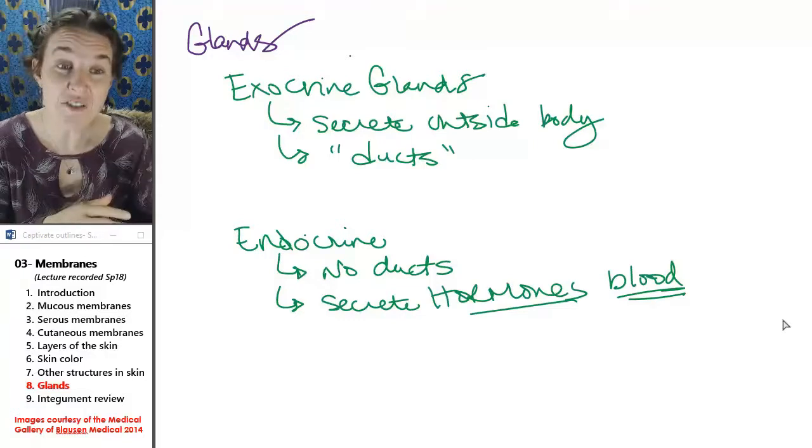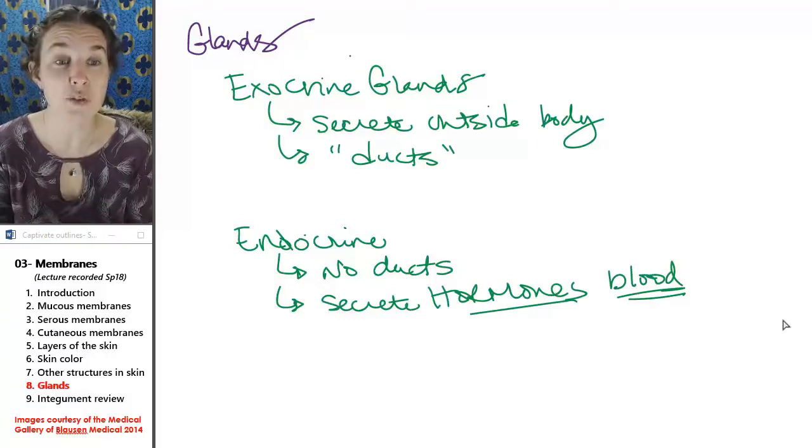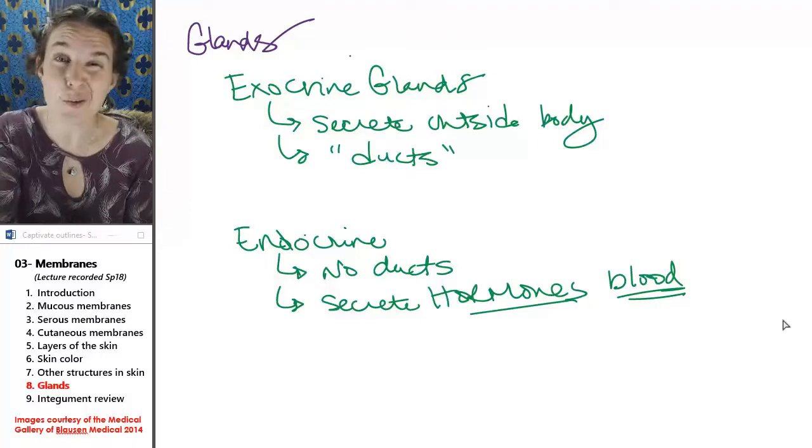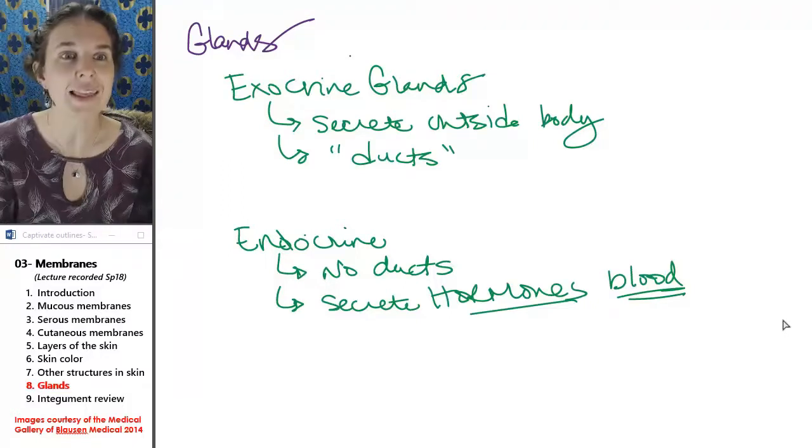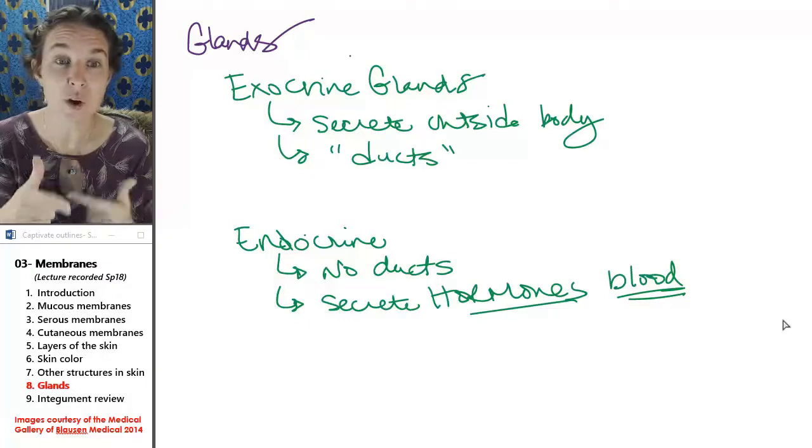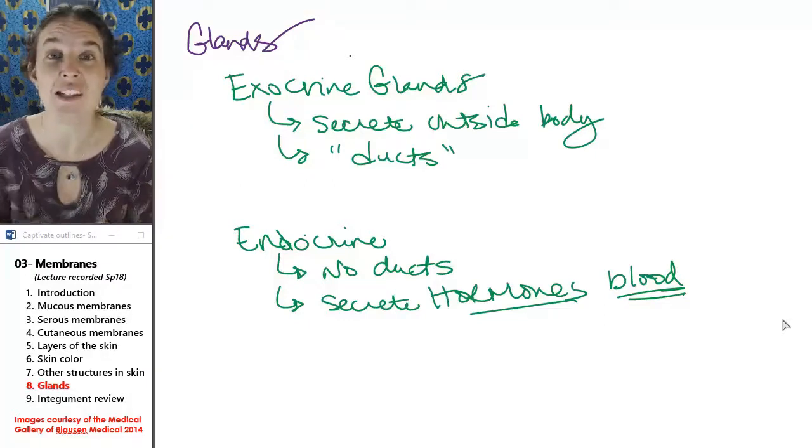If the secretion is being produced and secreted outside of the body, like sweat glands, then those glands are exocrine glands.